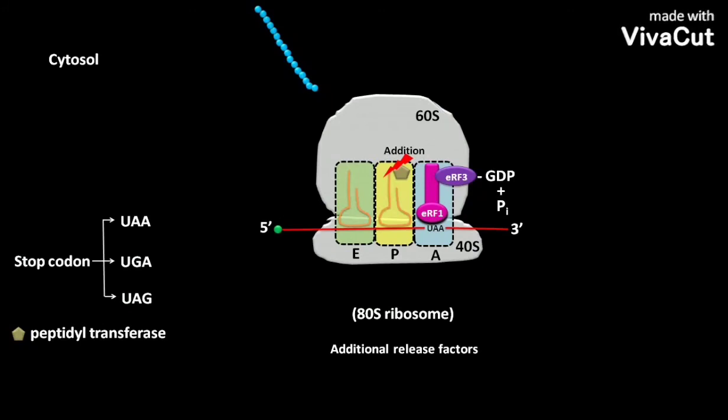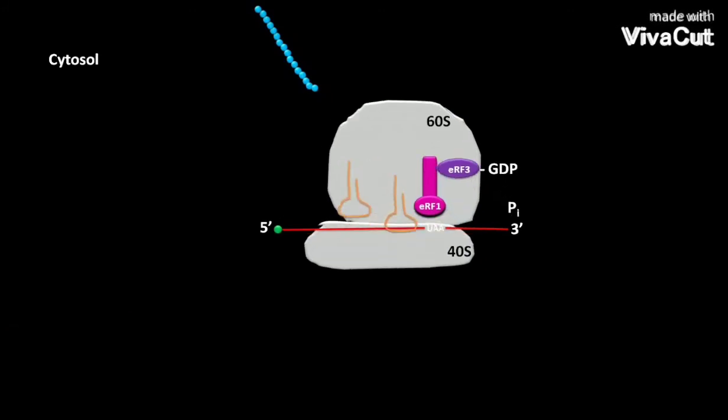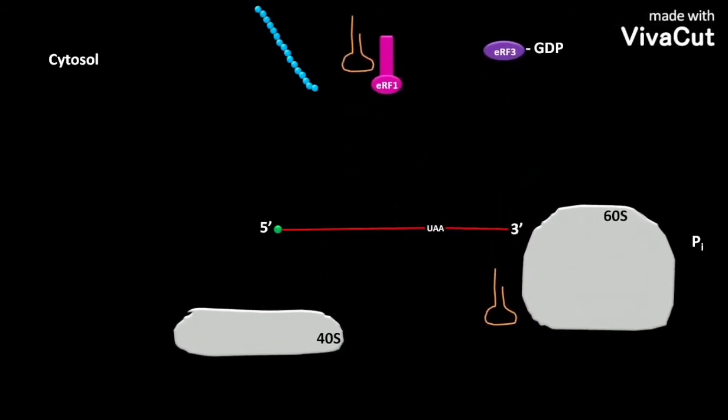Then additional release factors promote the dissociation of the 80S ribosome. As a result, the 40S and 60S ribosomal subunits, mRNA, tRNAs, eRF1, and eRF3-GDP are freed to carry out another round of translation.